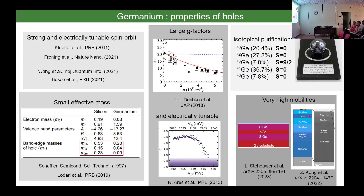Germanium has large g-factors — what we hide from people when we write proposals is that this is really only true out-of-plane. In-plane g-factors are low (around 0.35), which is a challenge we are trying to address, especially for hybrid systems where you typically need in-plane magnetic fields. We can also isotopically purify germanium, as silicon can. Planar germanium has shown very high mobilities — last week the group of Giordano Scappucci posted on arXiv the first germanium heterostructure grown on germanium, reporting mobility above three million, with potential to reach ten million.